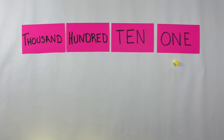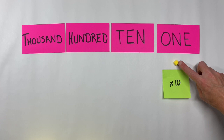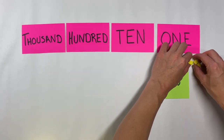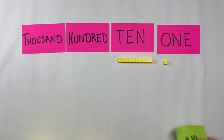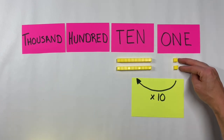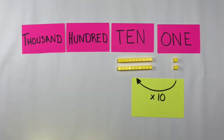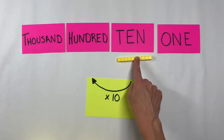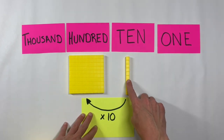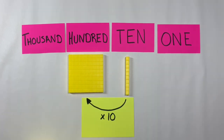If we have one unit cube and multiply it by ten, we get ten groups of itself — ten unit cubes that regroup into a tens rod. If we have two unit cubes and multiply by ten, each unit cube turns into a tens rod, so two ones become two tens. Likewise, if we have a ten and multiply it by ten, it turns into ten tens, which regroup into a hundreds flat. Taking a ten and multiplying by ten turns it into one hundred.